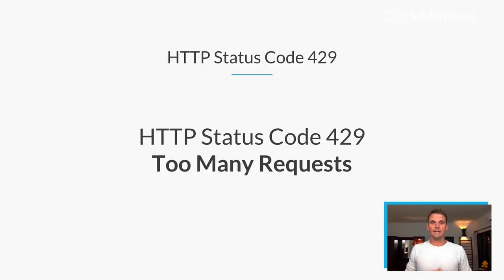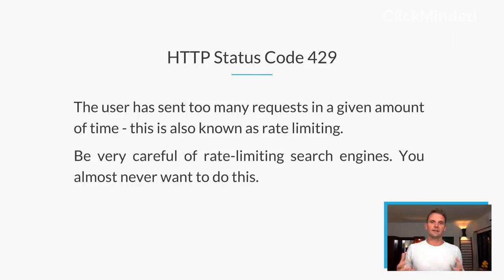Status code 429 — Too Many Requests. This is a client-side error where the user is sending too many requests in a given amount of time. This is also colloquially known as rate limiting. Be very careful about rate limiting search engines — if you have an engineering team aggressively trying to block bots, rate limiting search engines is a bad idea. A lot of search engine ranking tools get rate limited by Google from making too many requests. DDoS — distributed denial of service attacks — are essentially rate limiting problems. Blocking a certain IP address from making too many requests over a period of time is the first line of defense in blocking DDoS attacks.